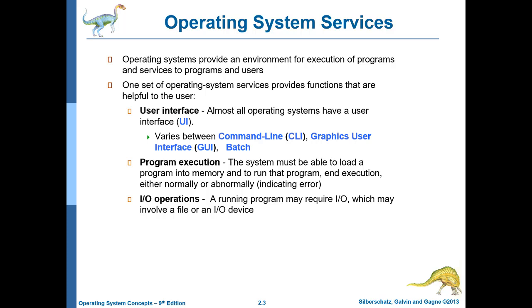The first type of service provided by the operating system is the user interface. Any operating system in general has a user interface, and there are different types. One type is the command line interface. For example, in Linux you have the terminal, and in Windows you have the command prompt, where you execute instructions.